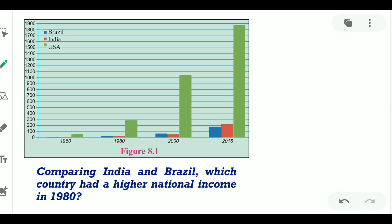Next question: comparing India and Brazil, which country had a higher national income in the 1980s? In the red color you can see India, and in the blue color you can see Brazil. The Brazil's bar is higher than India's. So in the 1980s, Brazil had more national income than India.